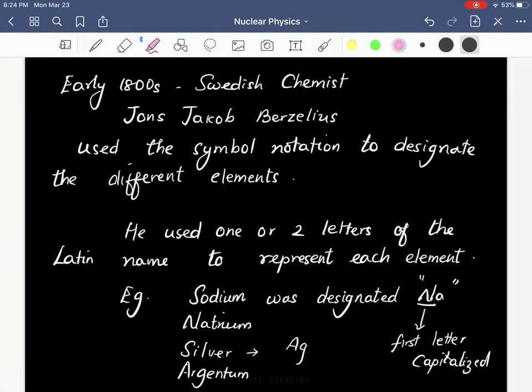1800s, it was the Swedish chemist Jöns Jacob Berzelius who used symbol notation to designate different elements. He used one or two letters of the Latin name to represent each element. For example...